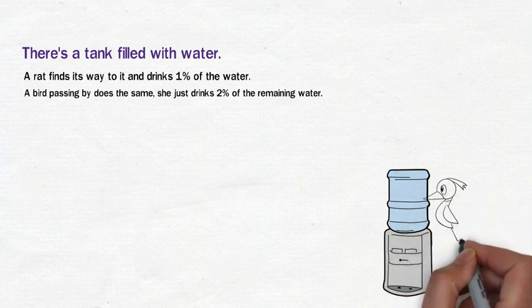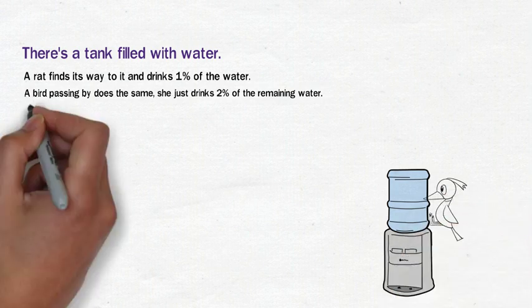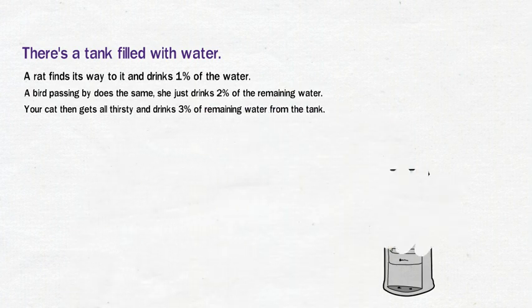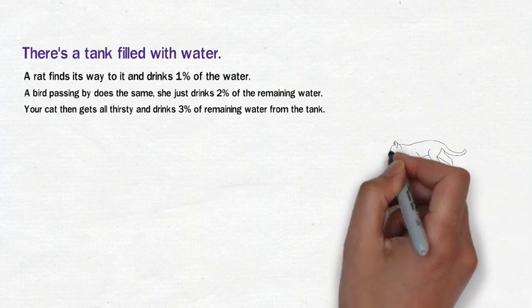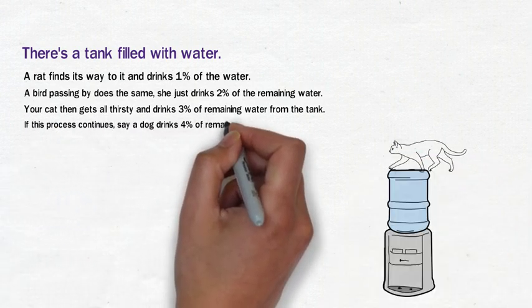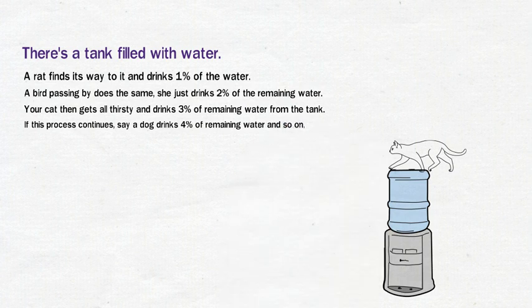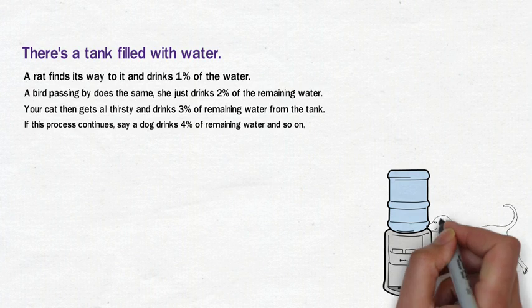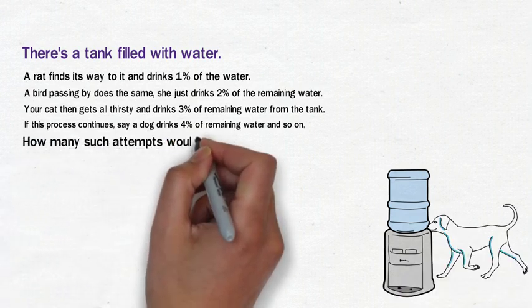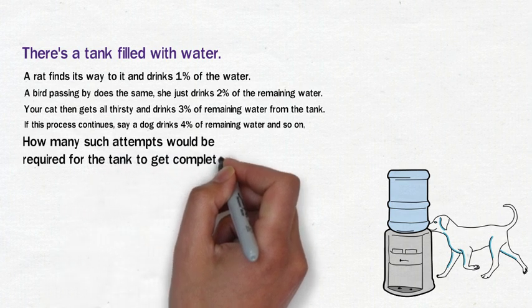Do take notice when I say the phrase 'remaining water'. Your cat now gets all thirsty, gets right on top of it, and drinks 3% of the remaining water. Now this process continues - a dog comes along, drinks 4% of the remaining water, and so on. So what do you think? What did the cat say to the dog? Wait, no, that's not my question. Here it is: how many times should this pattern continue for the tank to get completely empty?